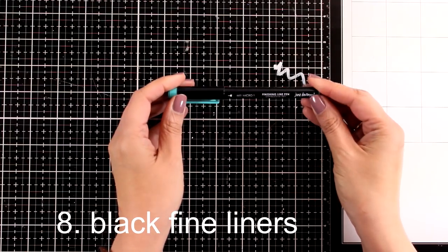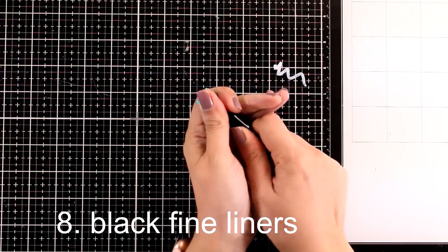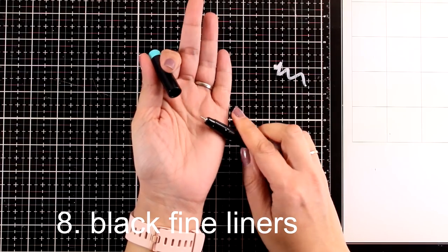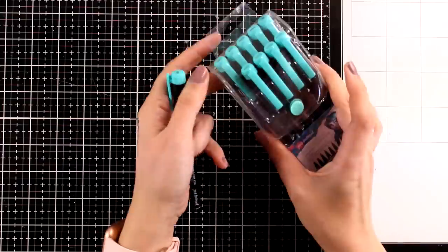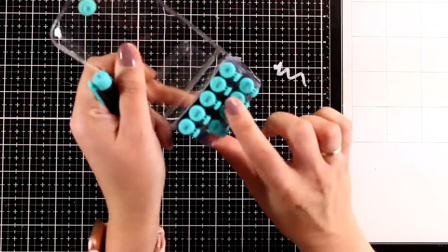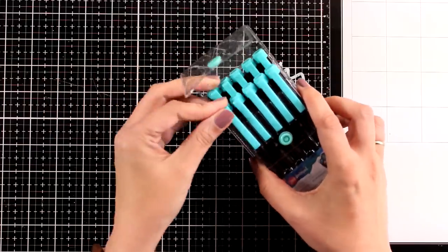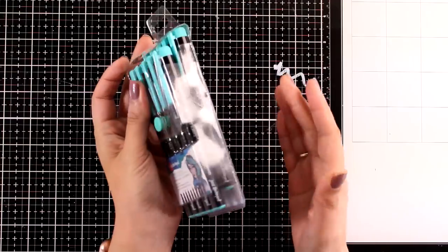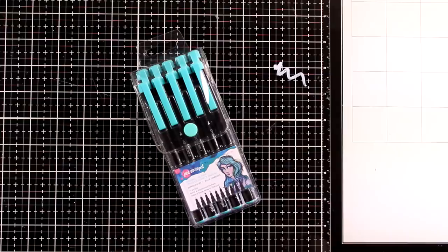And of course, another favorite are my fine liners. There are so many different brands out there. Lately, I'm using these Spellbinders ones, just because they come in a set and they have a really wide collection of nibs, all the way from chisel tip to brush nibs, as well as super fine ones. But there are many of them in the market. I always make sure that these are permanent, so I cannot smudge or smear them. And that's really important for my go-to techniques.